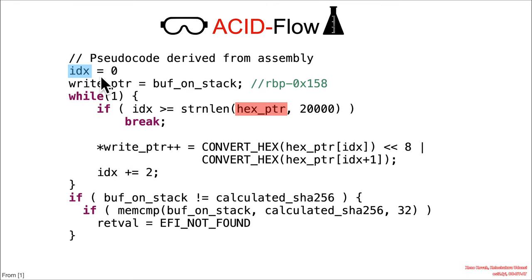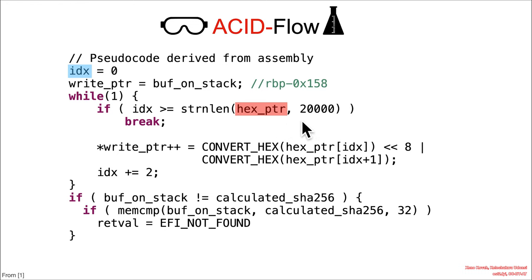We have the code here. We've got our index set to zero at the beginning. We've got the buffer on the stack at rbp minus 158, setting that to the right pointer. Then we've got the hex pointer — the attacker-controlled value — and we're doing strnlen, but the maximum size is 20,000.